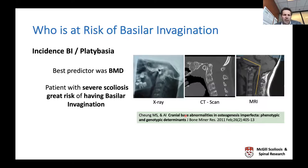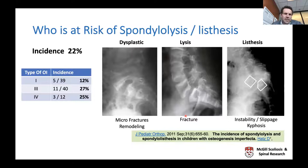Patients at risk of developing basilar invagination or platybasia are really those with low bone mineral density. So if you have a child with severe scoliosis, multiple limb deformities, and multiple fractures, make sure you're also imaging both ends of the spine. Similarly, spondylolysis and spondylolisthesis follow the same distribution—the more severe the OI, the greater the incidence.